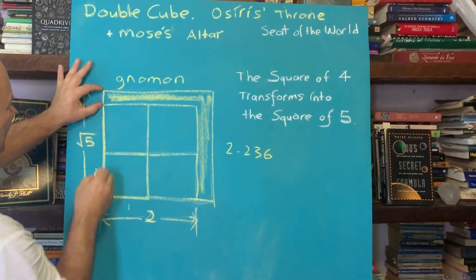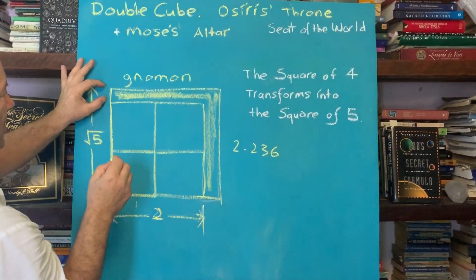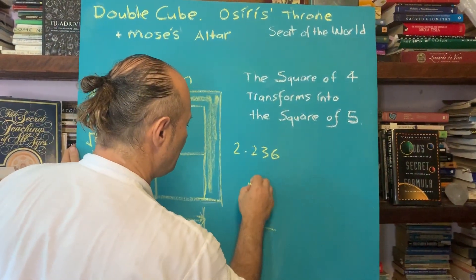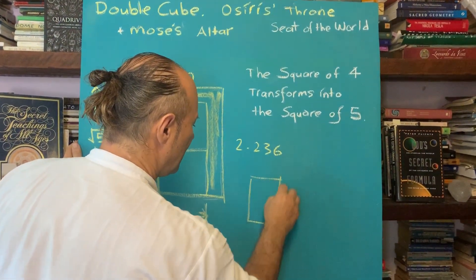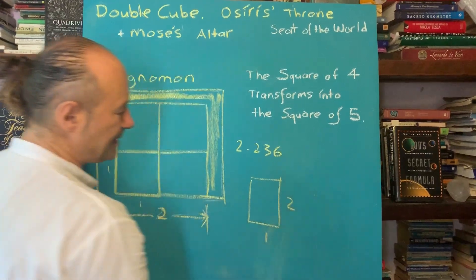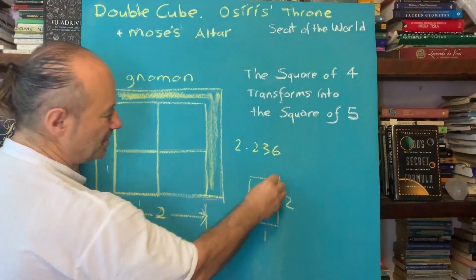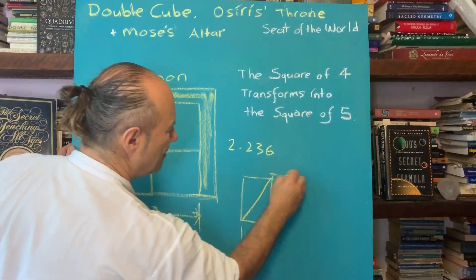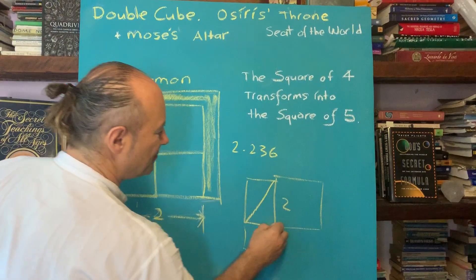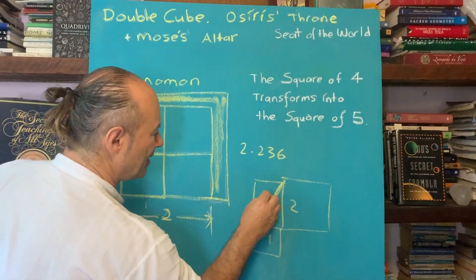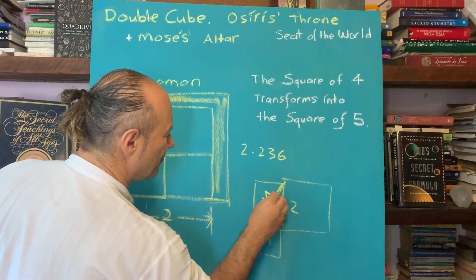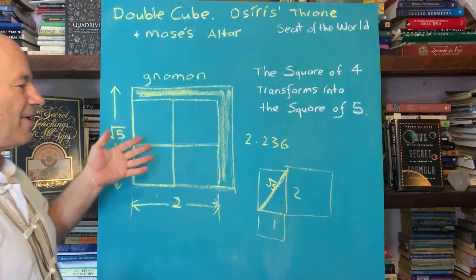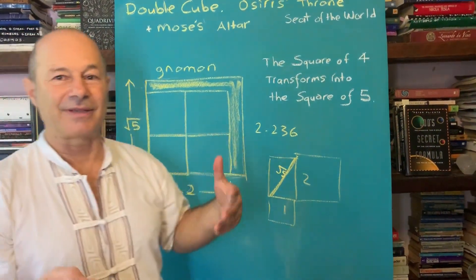It's a bit more than two, so if this is two, this little extra bit is 0.236. Using Pythagoras' theorem on a rectangle one by two, the diagonal is the square of one plus the square of two, which gives us a calculation called root five. And we know that root two, root three, and root five are the harmonics of everything.